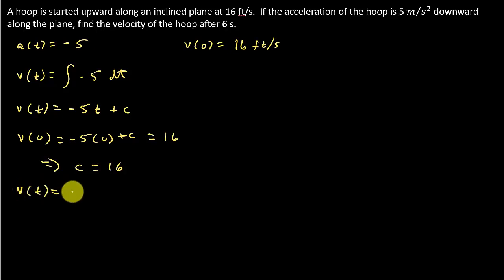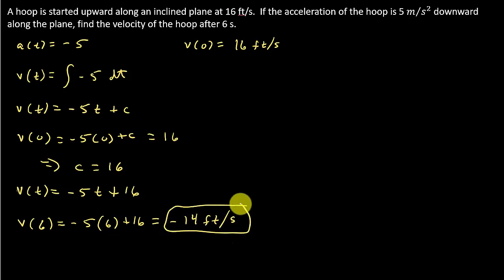And so this tells me that c is equal to 16. So now I can put that my velocity function is negative 5t plus c, which in this case is 16. So there's my velocity function. So what does this want to know? It says find the velocity of the hoop after 6 seconds. So when t is 6, what is the velocity? And that comes out to be negative 14 feet per second.